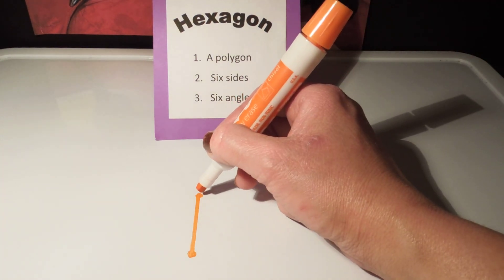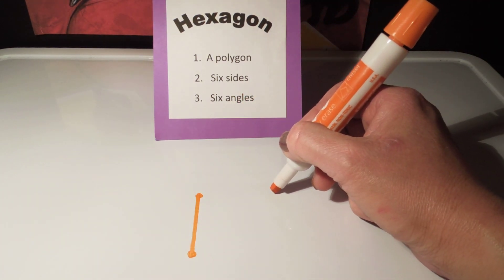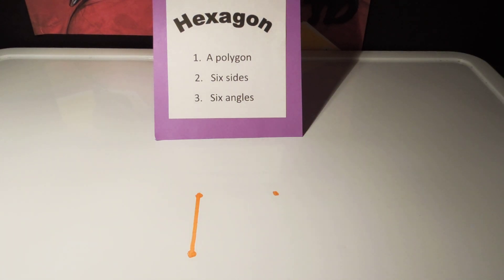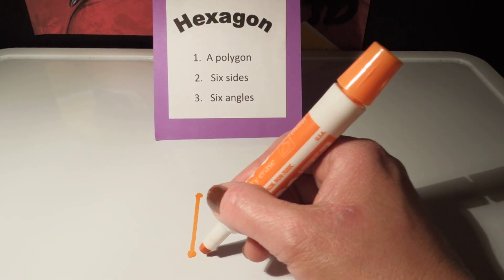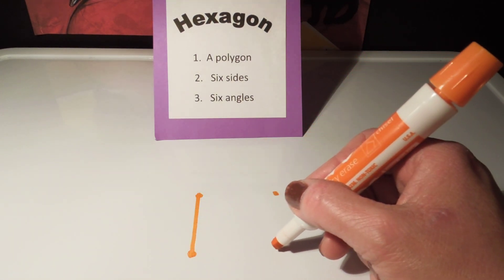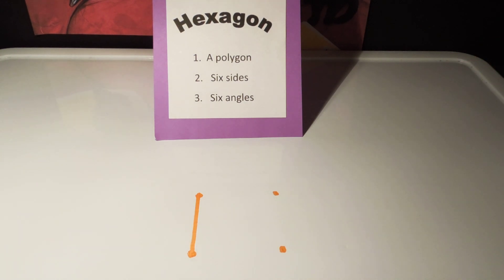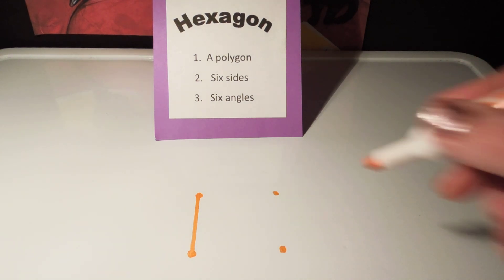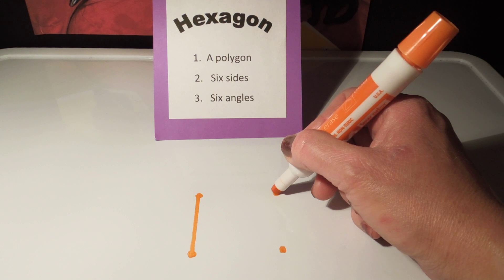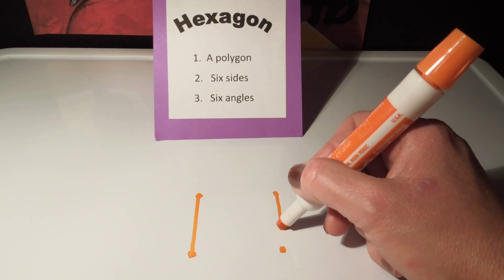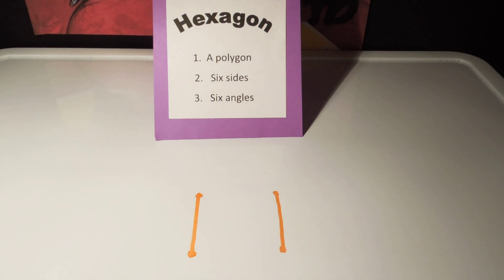Then I'm going to go straight across and draw another point. From the bottom point, I'm going to go straight across and draw another point. Then I'm going to connect these two points, forming a vertical line segment.